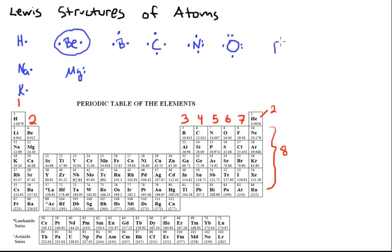Fluorine and the other halogens have seven valence electrons, 2, 3, 4, 5, 6, 7.